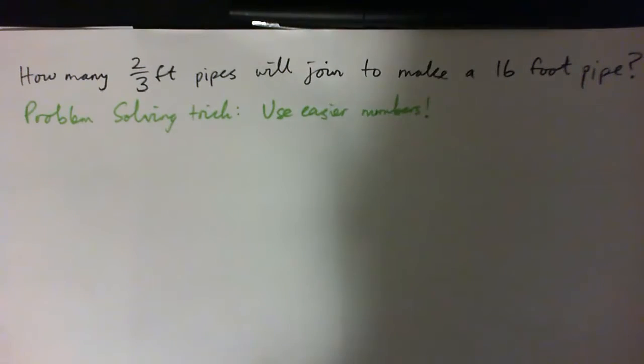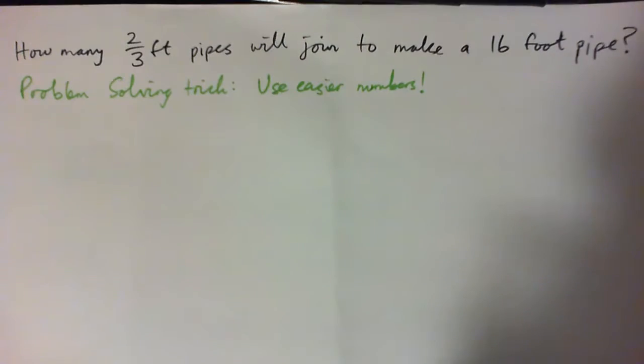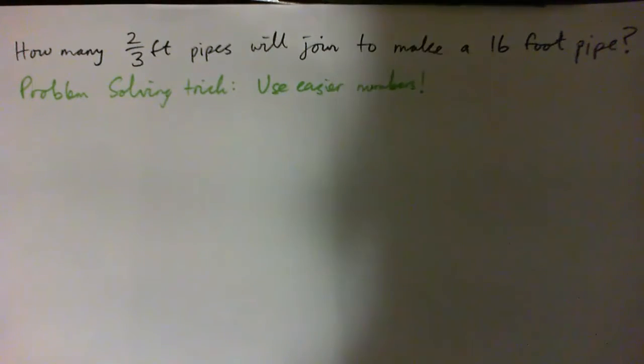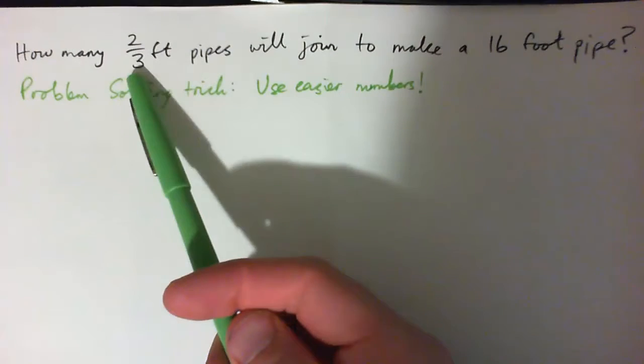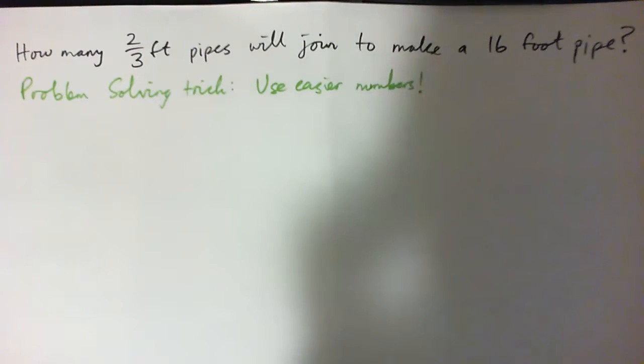So this question we're asking: how many two-thirds foot pipes will join together to make a 16-foot pipe? How do we get that? Well, first of all, we use our problem-solving trick: use easier numbers. What do you mean? Make up easier numbers. You're confused what to do because you've got a fraction involved, right? So that's all confusing. Okay, so don't use it. Use something else. Make something up.